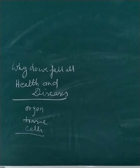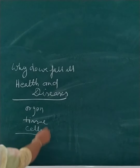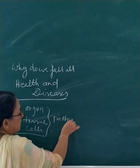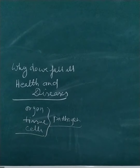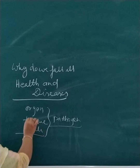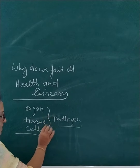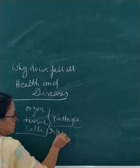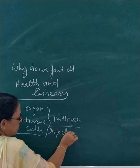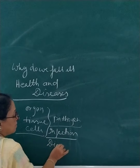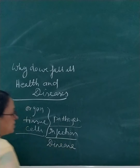What does infection mean? Some pathogen attacks our body — the body is affected by a pathogen. These pathogens cause harm to the living system. When an infection occurs and we are affected, we are called diseased.